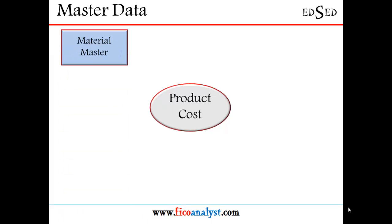First and foremost, the material master data is very, very important. The material master is for inventory management, and it also has costing and accounting views — accounting view 1 and 2, and costing view 1 and 2. That data is necessary to be maintained in order to have product costing estimated and used for different purposes. The MM module is solely responsible for this.